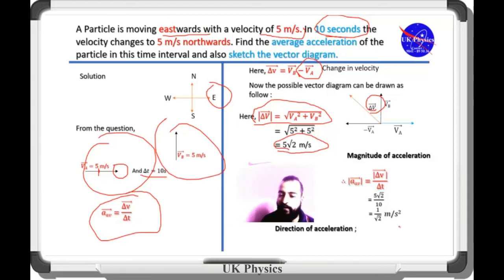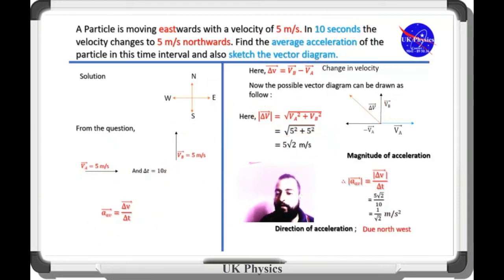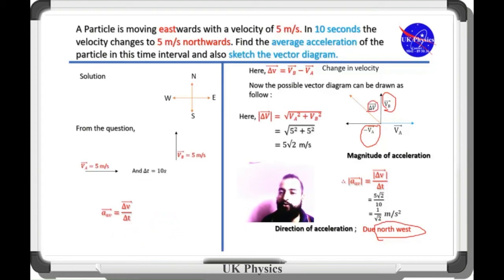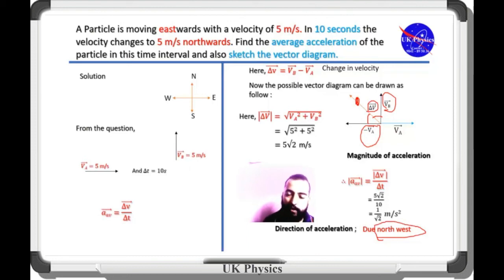Now, the direction of acceleration is obviously northwest — exactly midway between north and west. As you can see in the figure, vector B and the negative of vector A are perpendicular to each other. The resultant makes an angle of 45 degrees on each side, so the direction is due northwest. In this way, these questions can be solved. Thanks for watching.